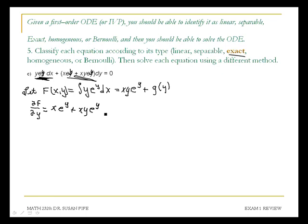On this G of Y, the derivative is just G prime of Y. Now, this should be equal to the other argument in the equation. That should be equal to X E to the Y plus XY E to the Y.